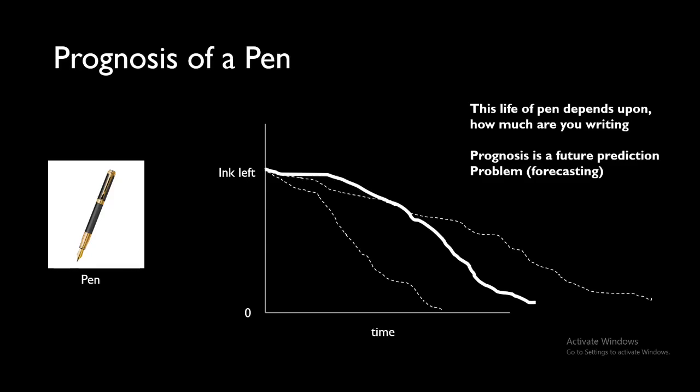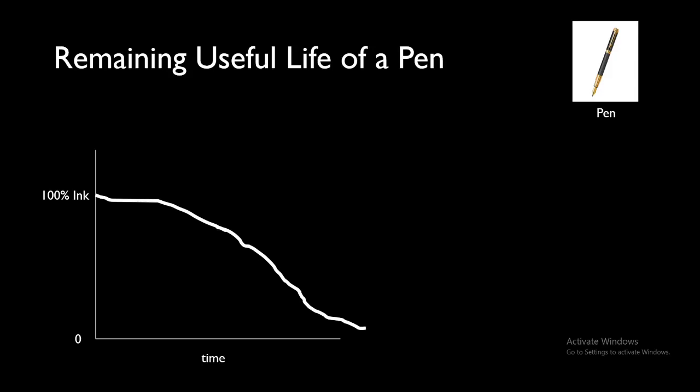There can be other trajectories as well for the amount of ink to time graph. If someone writes more, then of course it will take less time to finish, and if someone uses less writing then it takes a longer time to finish the entire ink.